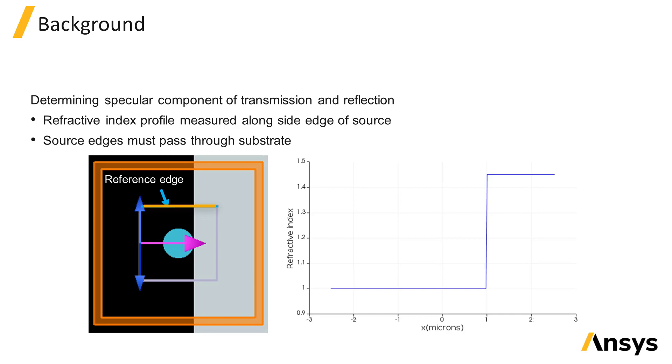The refractive index profile of the structure along this edge is measured and the fields that would be directly reflected or transmitted by the reference refractive index profile can be calculated. This is what gets subtracted at the boundaries during the simulation.